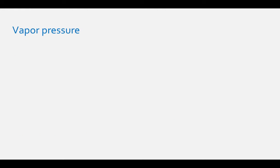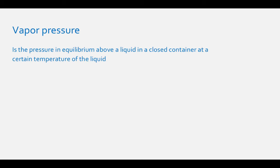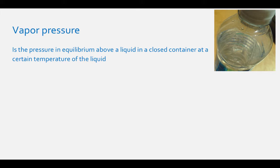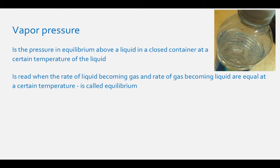The first concept to understand is vapor pressure. Vapor pressure is the pressure in equilibrium above a liquid in a closed container at a certain temperature. If you leave a closed bottle of water on the counter, some of the liquid molecules are turned into a gas and released from the top of the liquid. You can view this as condensation on the sides of the bottle above the liquid. Eventually, the rate of liquid becoming gas and of gas becoming liquid will be equal, and equilibrium is reached. This is when the vapor pressure is read at a certain temperature.